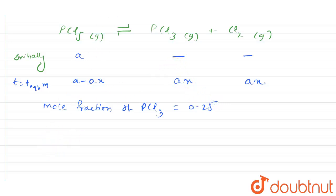And you can clearly see that number of moles of PCL3 is equal to number of moles of CL2 because only 1 mole is there for each product.